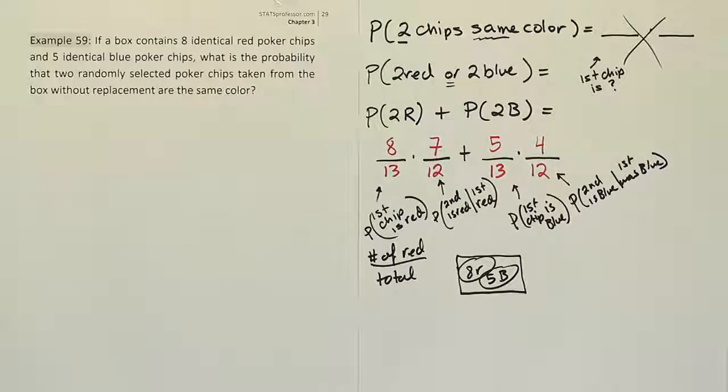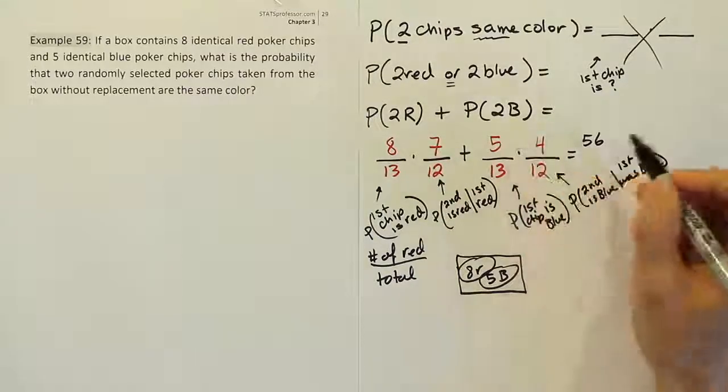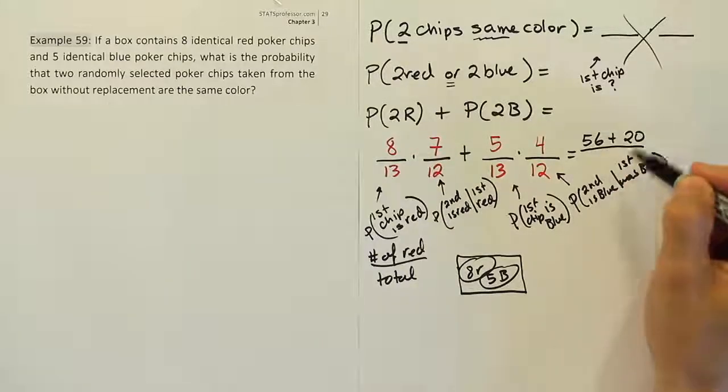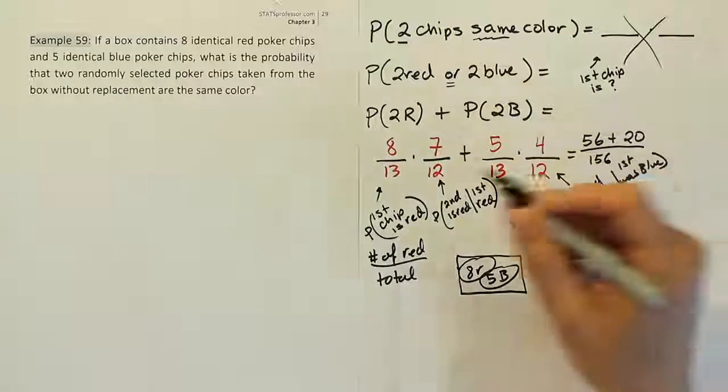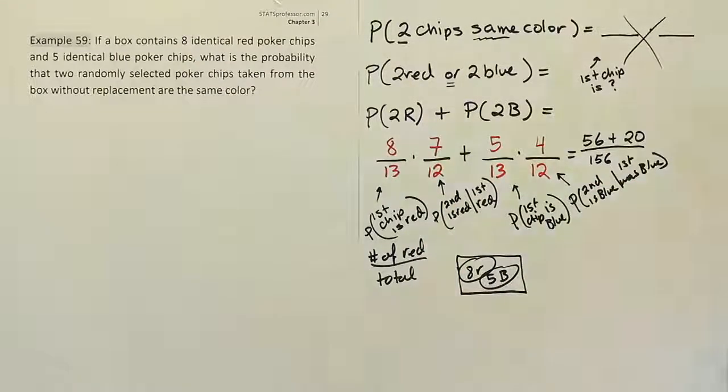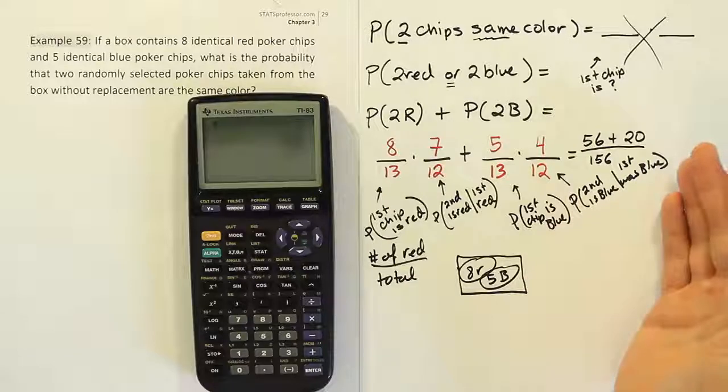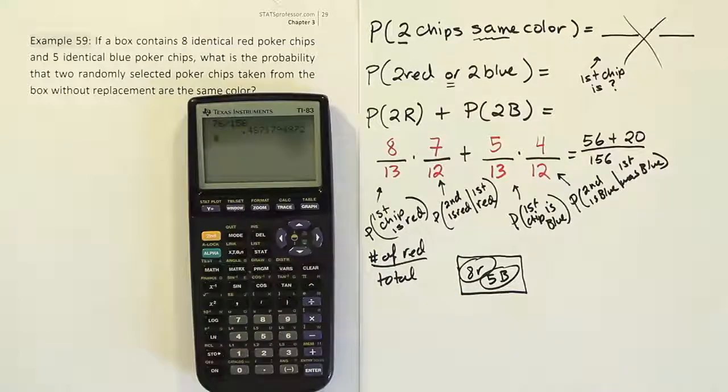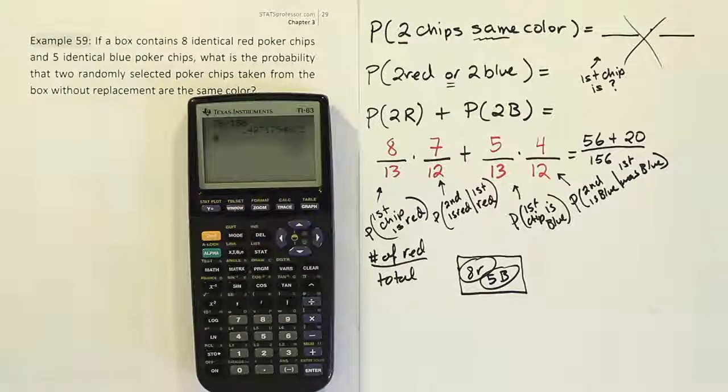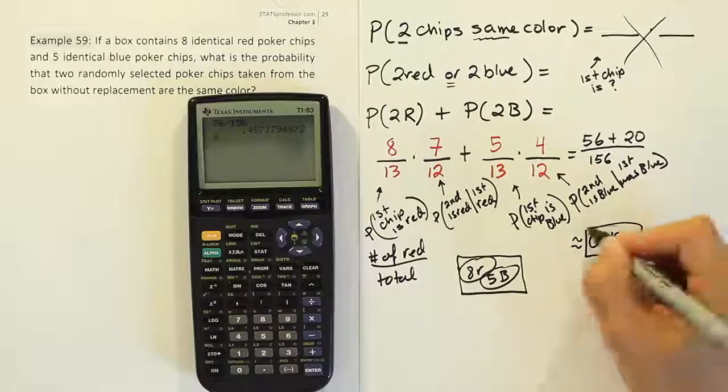Then we can just clean this up a little bit, get the numerical answer here. So 8 times 7 of course is 56, and 5 times 4 of course is 20. And then we have 13 times 12. 13 times 12 should be 156. And then let's work that out in our calculator to see what we get here. We'll have 56 plus 20 or 76 over 156. 76 divided by 156 and you get the answer 0.487. So the overall answer to this question is approximately 0.487 or 48.7 percent of the time.